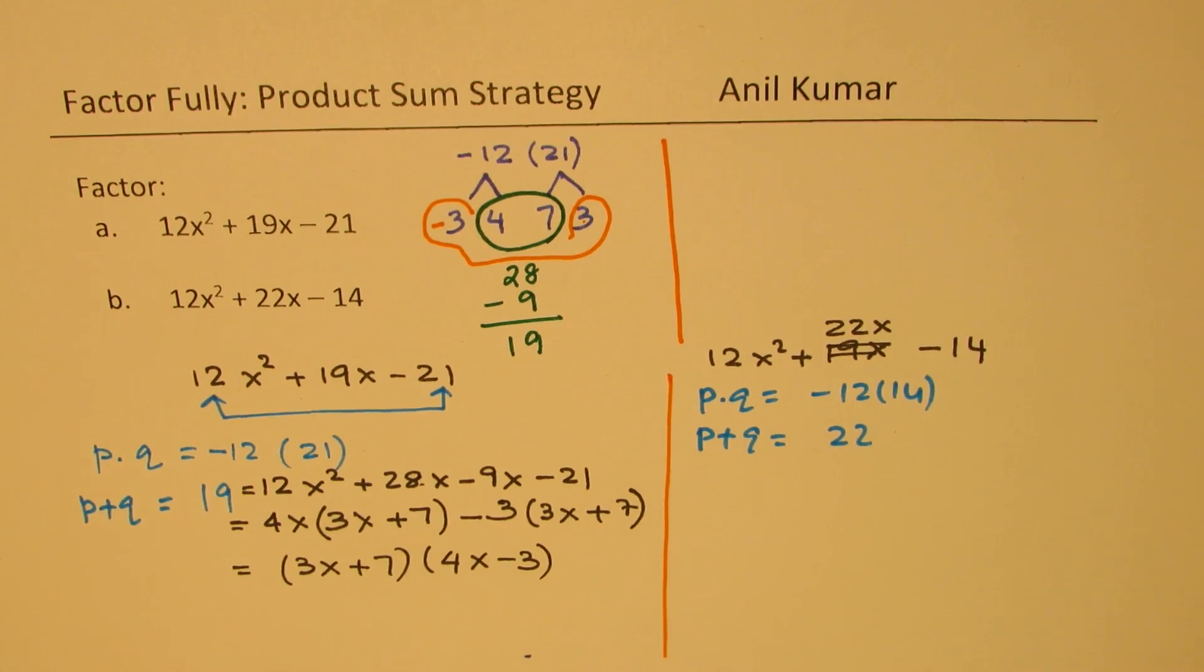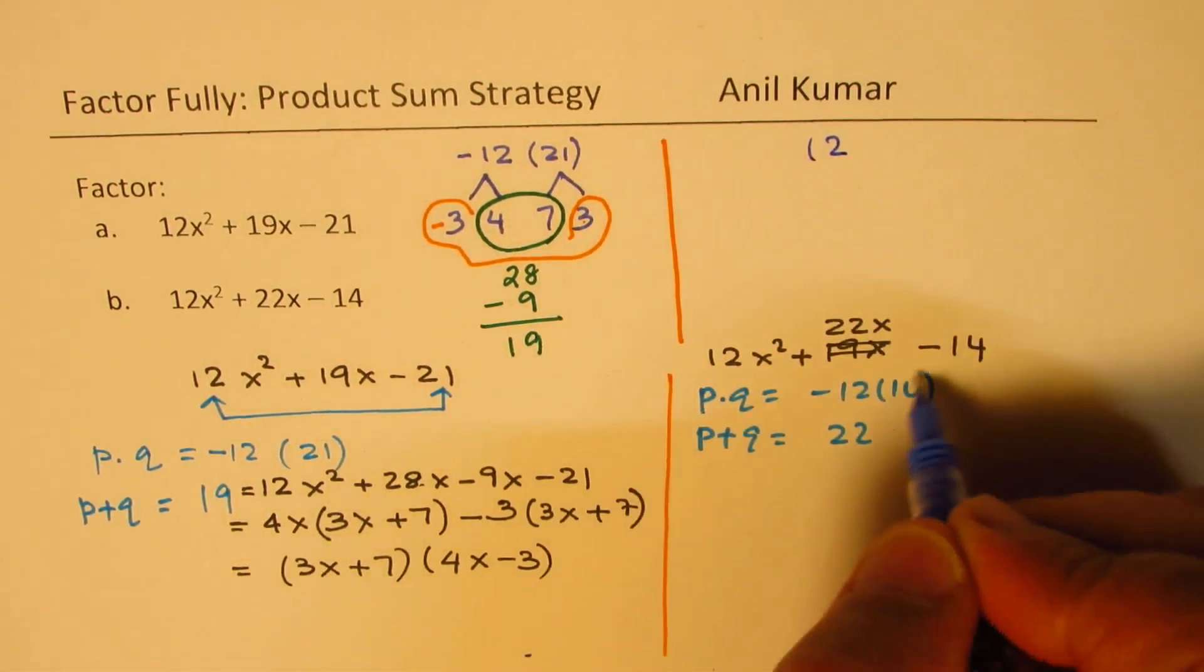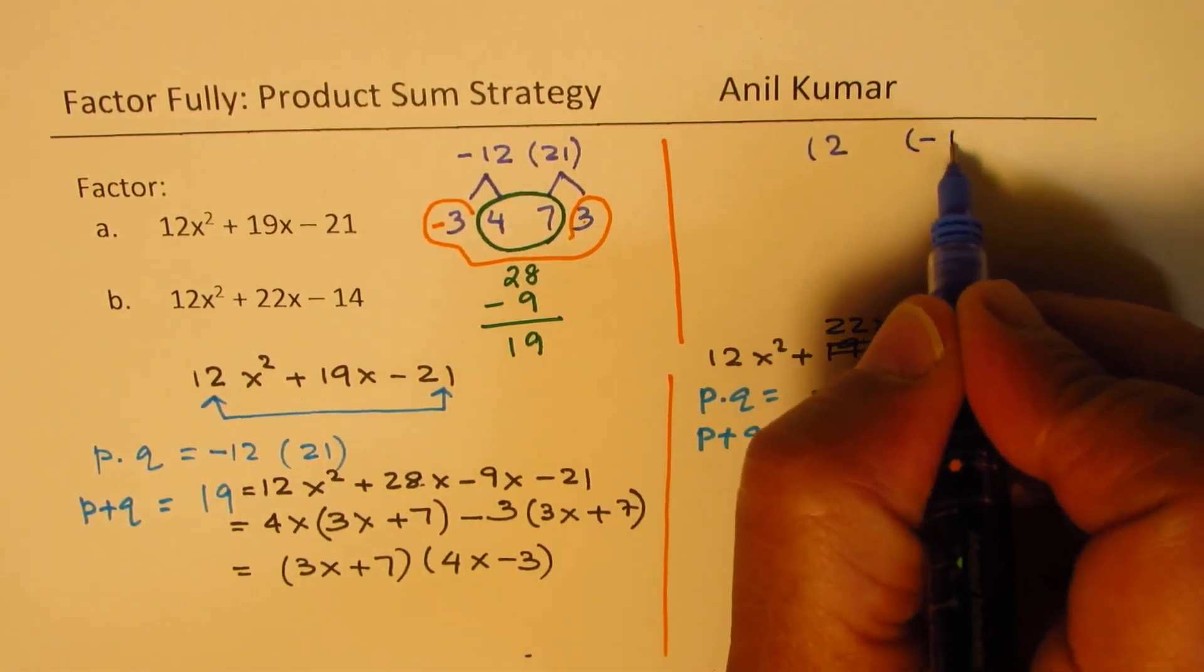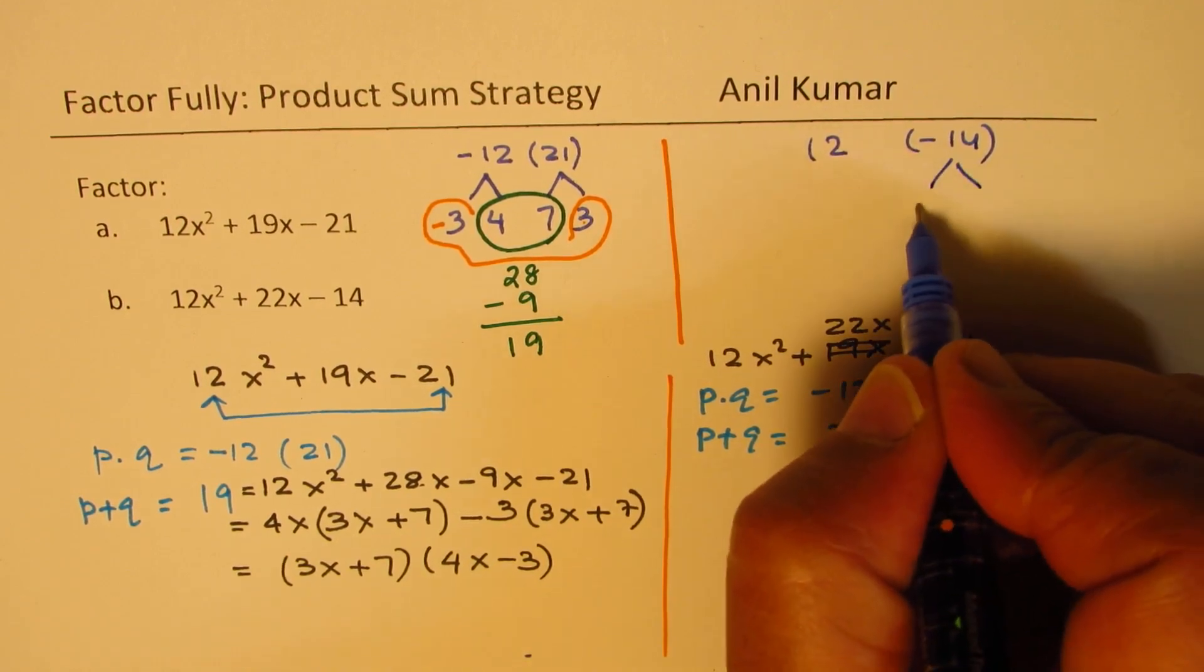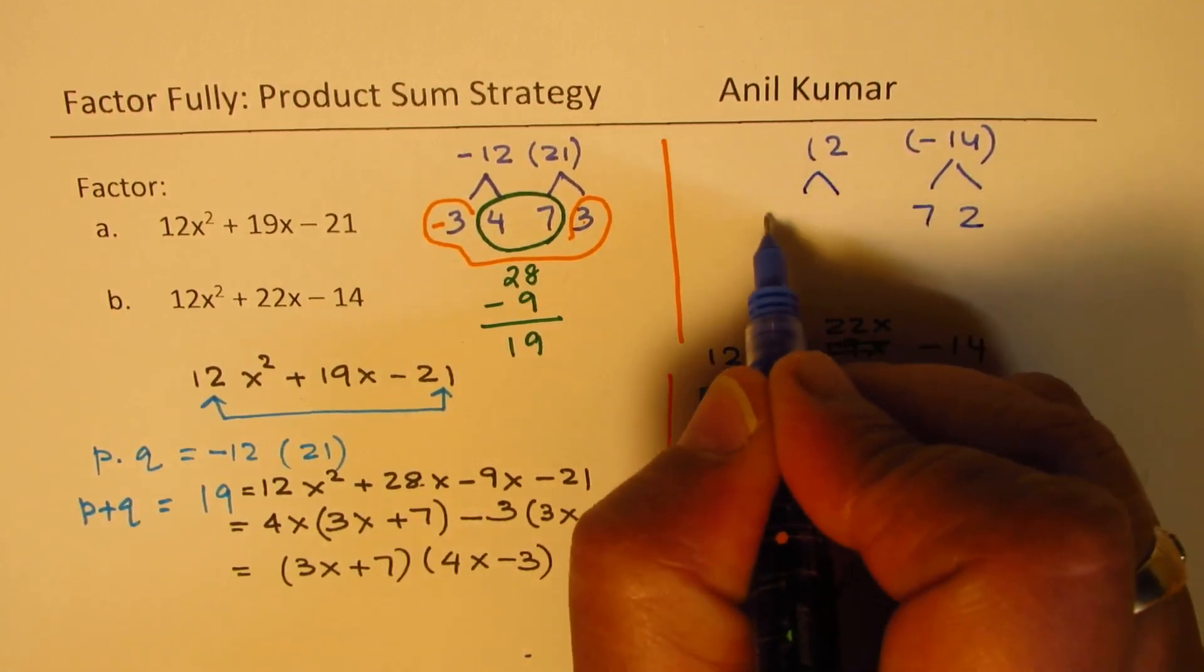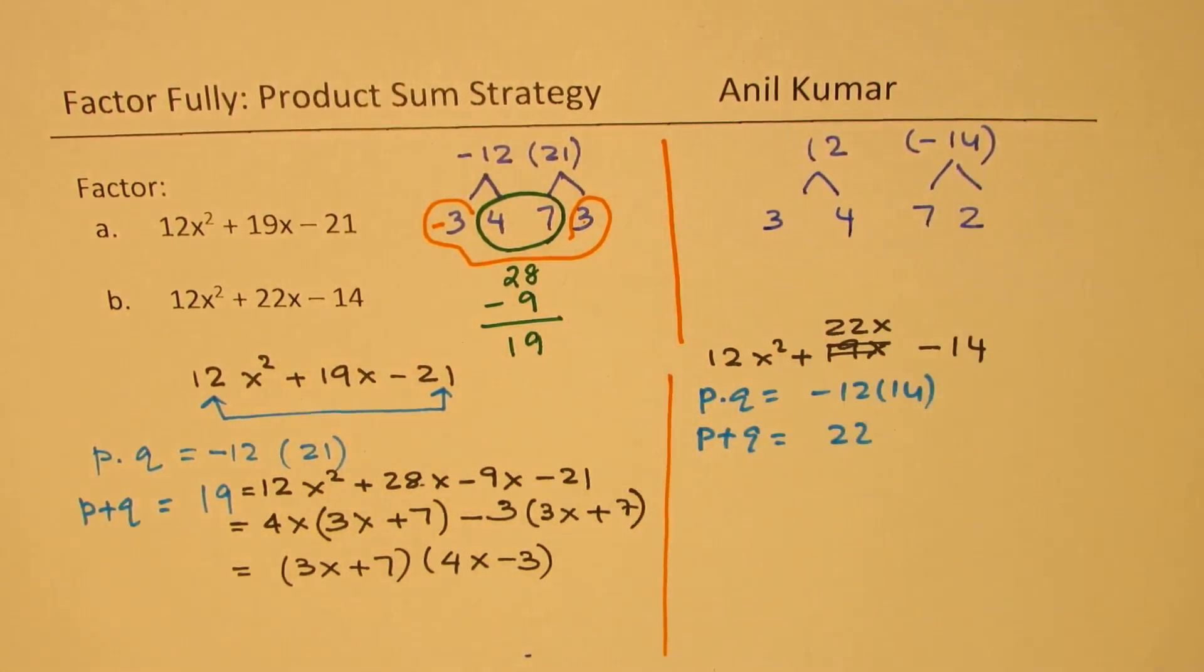Now let's look into the second case. In this case again, we have purposely taken the similar values. We have 12 and this time it is -14. So again, 14 could be written as 7 times 2. 12 can be written as 3 times 4. And you can see the combination.